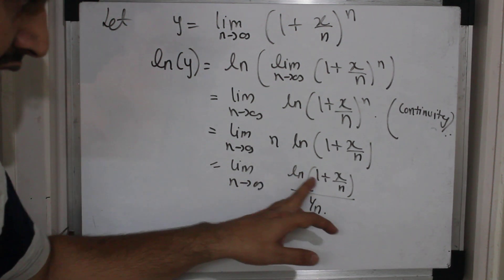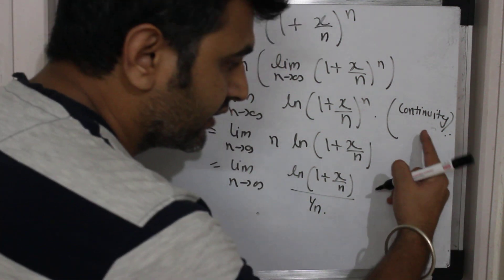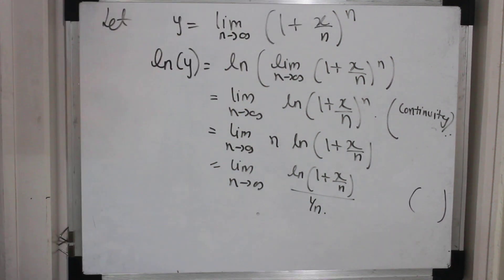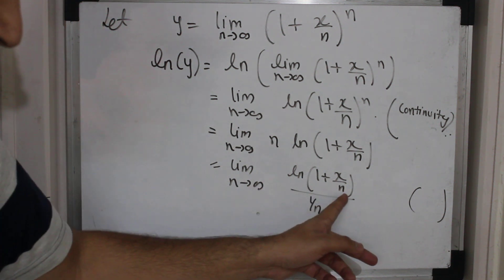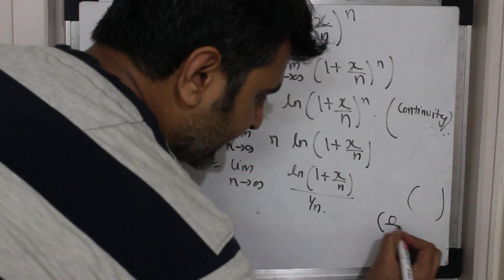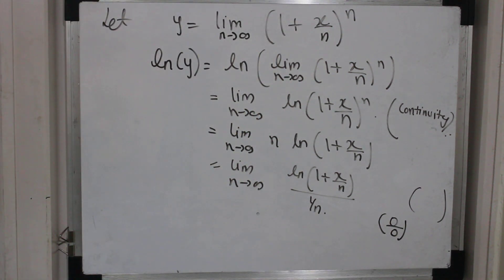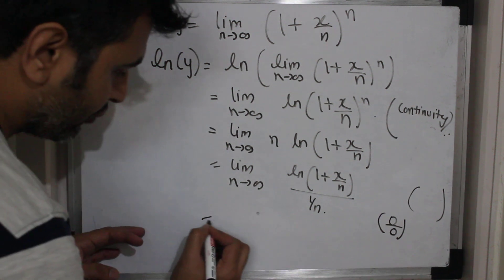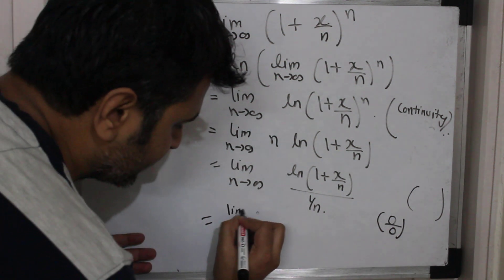As n goes to infinity, there's a log in between, but again I can take the log inside thanks to the continuity theorem. I can say that as n goes to infinity this goes to 0, and what's left is ln(1), and ln(1) is also 0. So I have a 0/0 form, and since I have 0/0 form, I can apply L'Hôpital's rule.